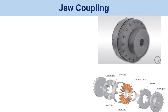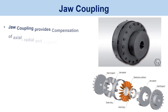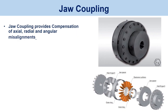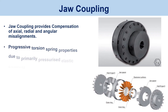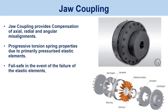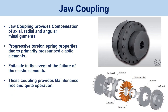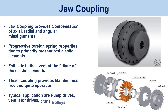Jaw coupling. Jaw coupling provides compensation of axial, radial, and angular misalignments, along with progressive torsion spring properties due to primarily pressurized elastic elements. Fail-safe in the event of failure of the elastic elements. These couplings provide maintenance-free and quiet operation. Typical applications include pump drives, ventilator drives, and crane trolleys.